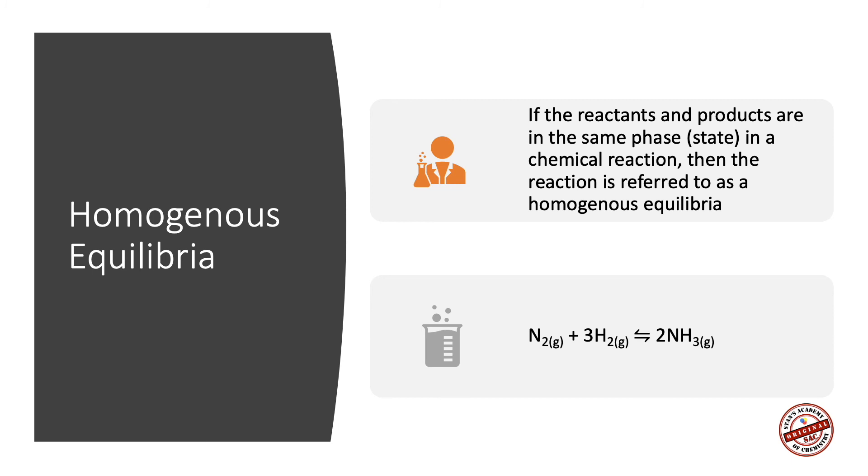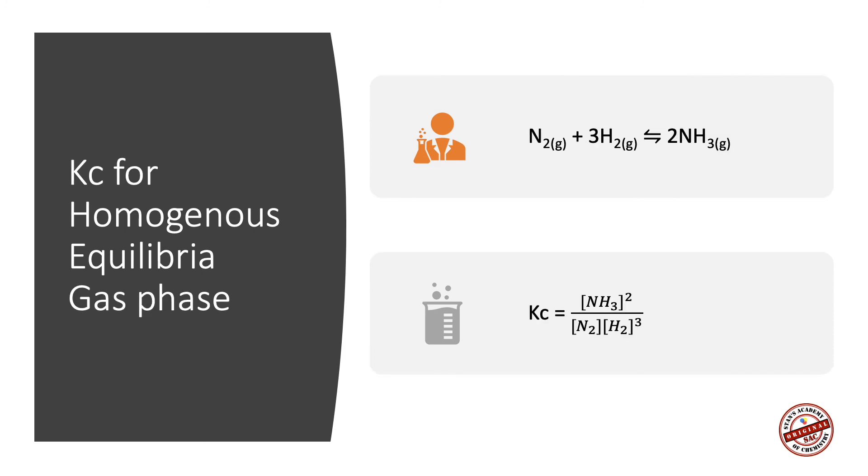Hence it's a homogeneous equilibria. Writing KC expressions for homogeneous equilibria involving all gases: KC equals NH₃ raised to 2 divided by N₂ raised to 1 and H₂ raised to 3. Both reactants and products are gases, therefore all are included in the equilibrium expression.